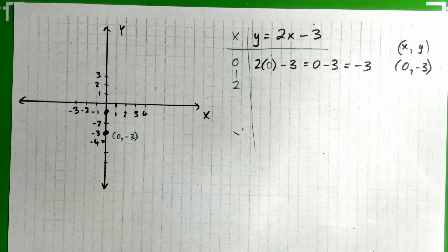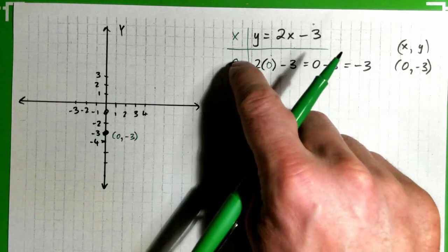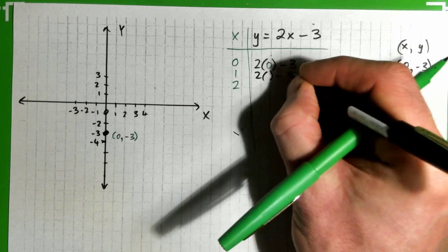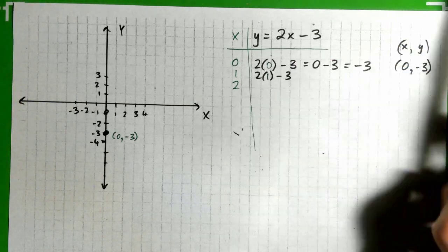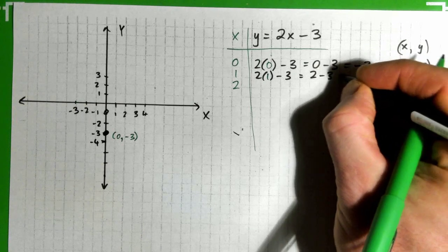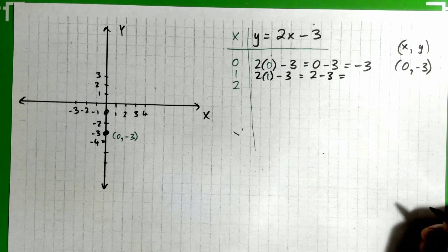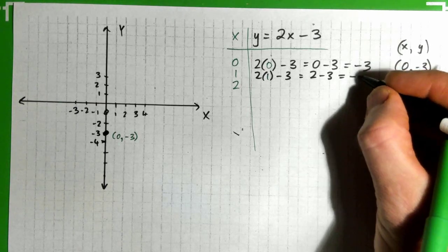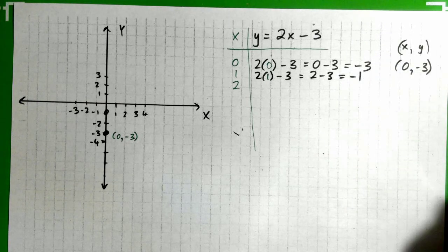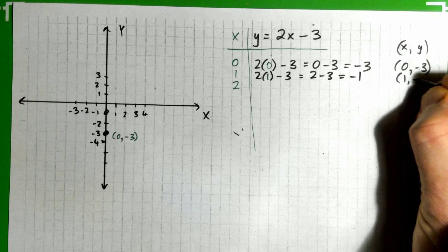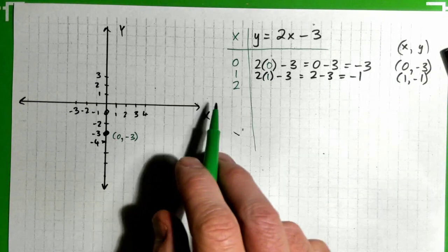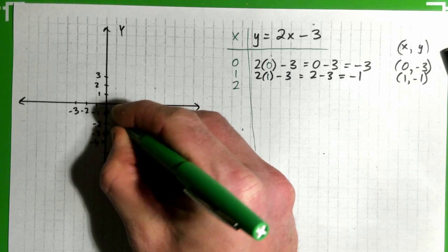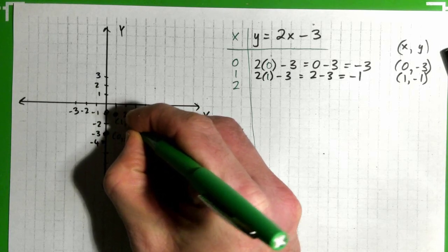Then we get another point. When x is 1 — and remember, I just made these numbers up — y is 2 times 1 minus 3. 2 times 1 is 2, and 2 minus 3: think of it as having $2 and taking away $3, you're in debt by $1. So y is negative 1. The point is (1, -1). We plot that on the graph.